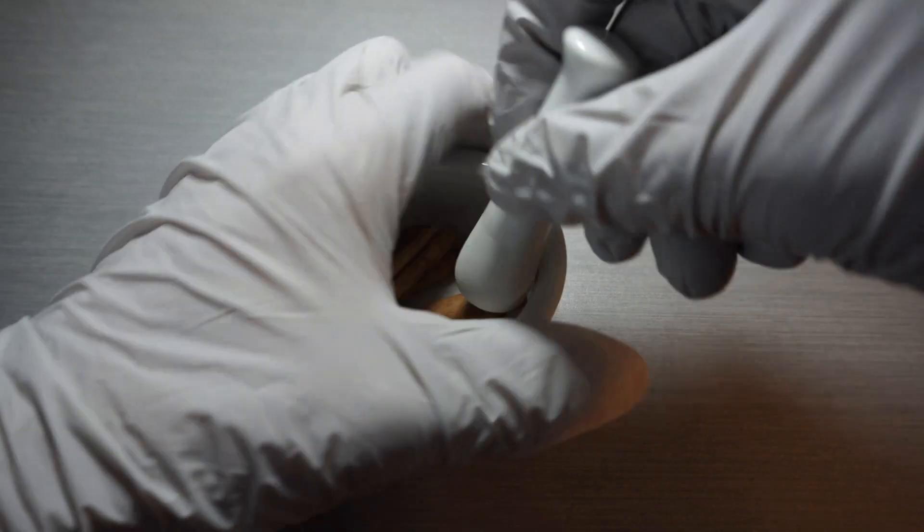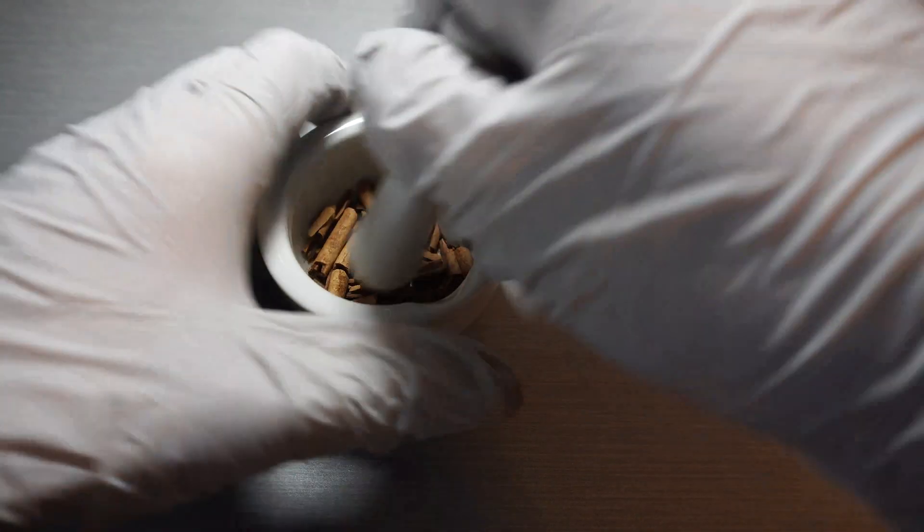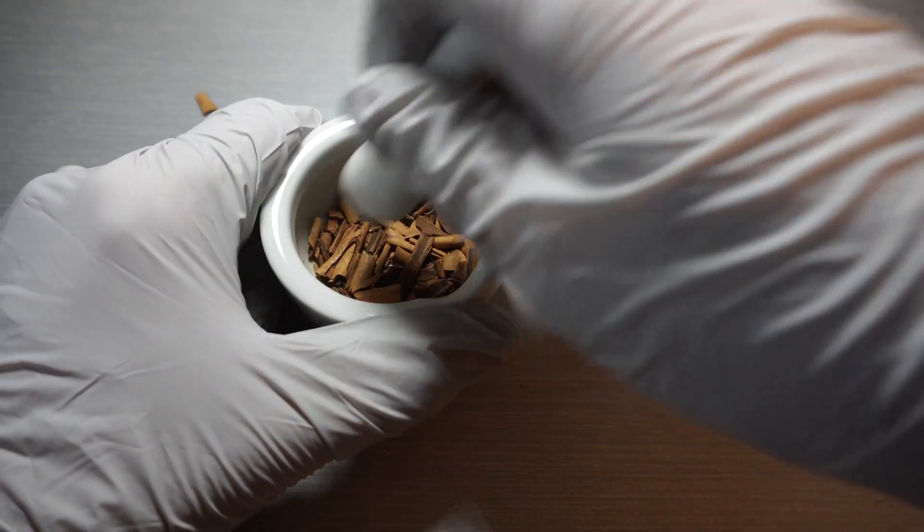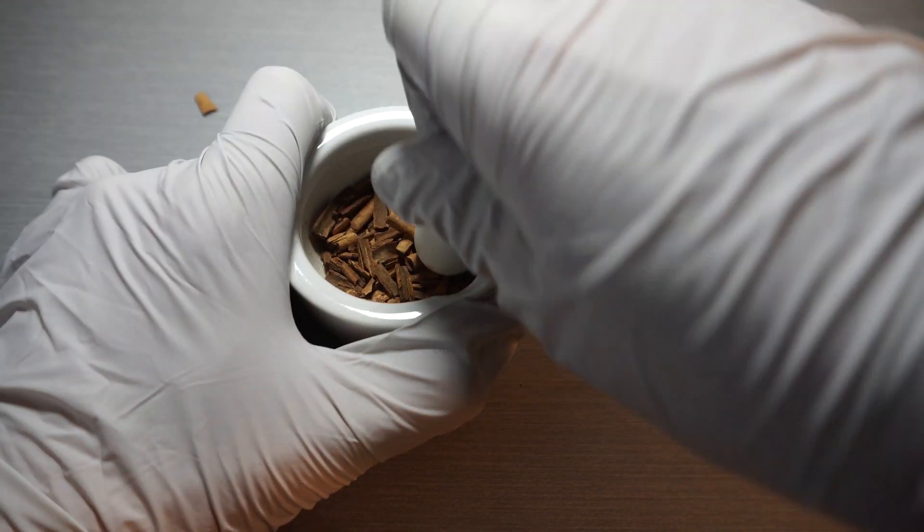Today, we will be using the method of hydrodistillation to pull the cinnamaldehyde from the bark of the cinnamon tree. To do that, we must first process the cinnamon down to be able to fit into a boiling flask. To do this, we start by breaking up the cinnamon using a pestle and mortar.